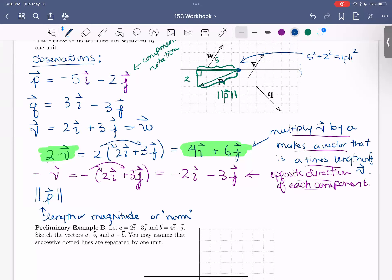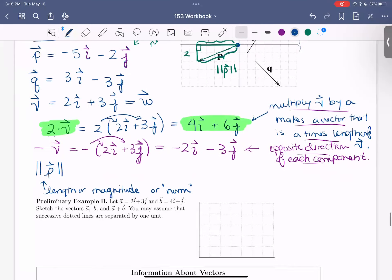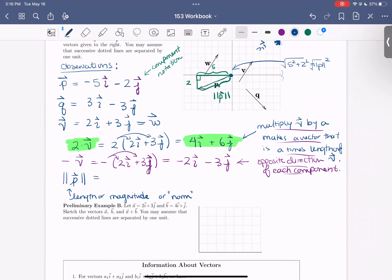So what that amounts to doing is taking the square root of the squares of the components. And it doesn't matter that these components were negative, because when we square them, those negatives come out. So this would be the square root of 29.